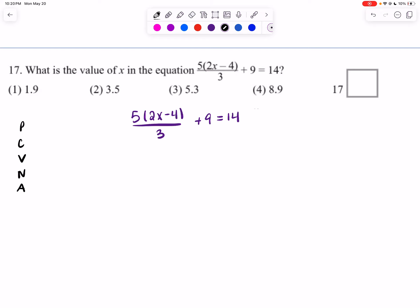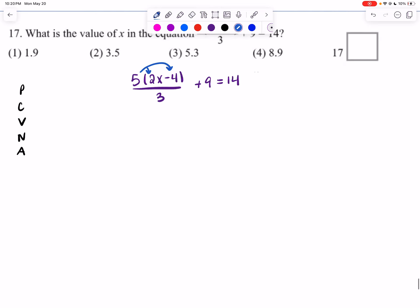Okay, so if we look at this equation, I do have parentheses in my numerator. So the first thing I'm going to do is distribute that 5 to 2x and that 5 to minus 4. So 5 times 2x is 10x. 5 times negative 4 is a negative 20. And I'm going to have it all over 3 plus 9 equal to 14.